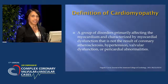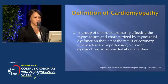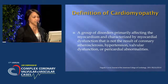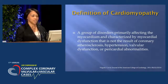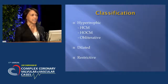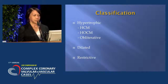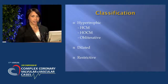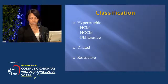The definition of cardiomyopathy is a group of disorders primarily affecting the myocardium and characterized by myocardial dysfunction that is not the result of coronary atherosclerosis, hypertension, valvular dysfunction, or pericardial abnormalities. There are certain classifications: the first is hypertrophic, which includes hypertrophic cardiomyopathy. Then there's obstructive, obliterative, dilated, and restrictive.